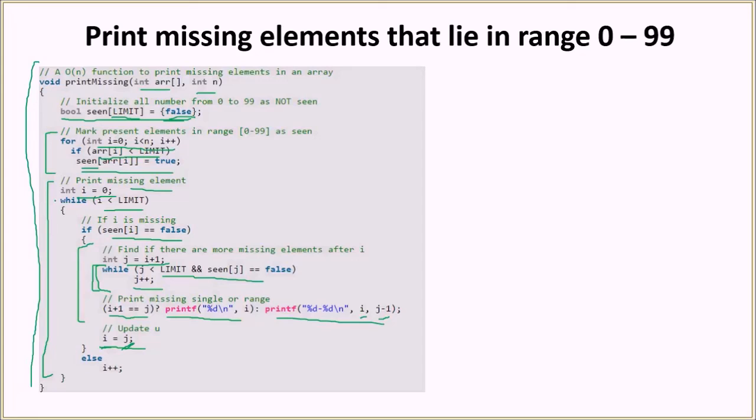This while condition will be working, and if we do not find that seen[i] is equal to false, then we just increment the value of i. At the end of this function we would have printed all the numbers which are missing in the range of 0 to 99.